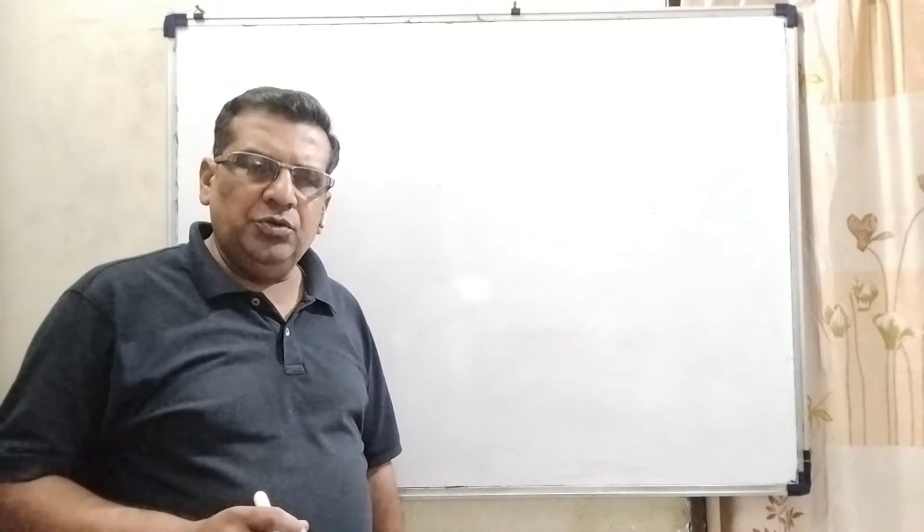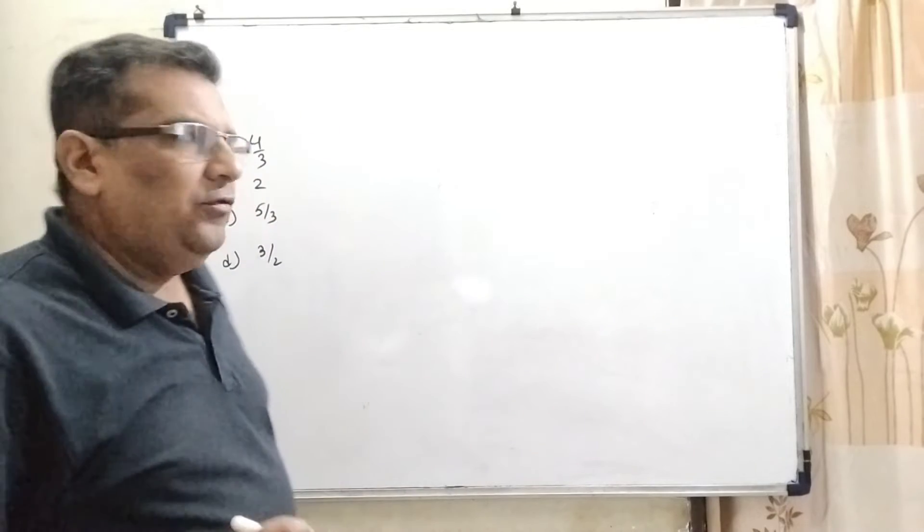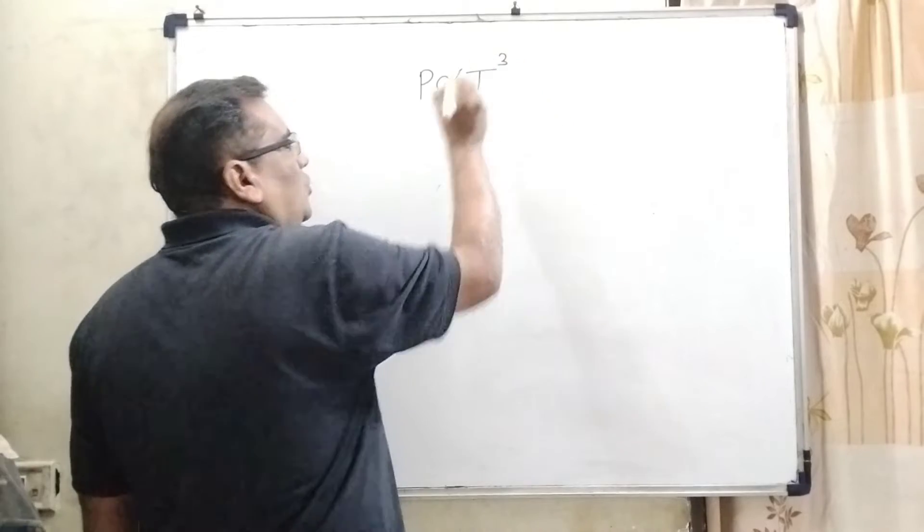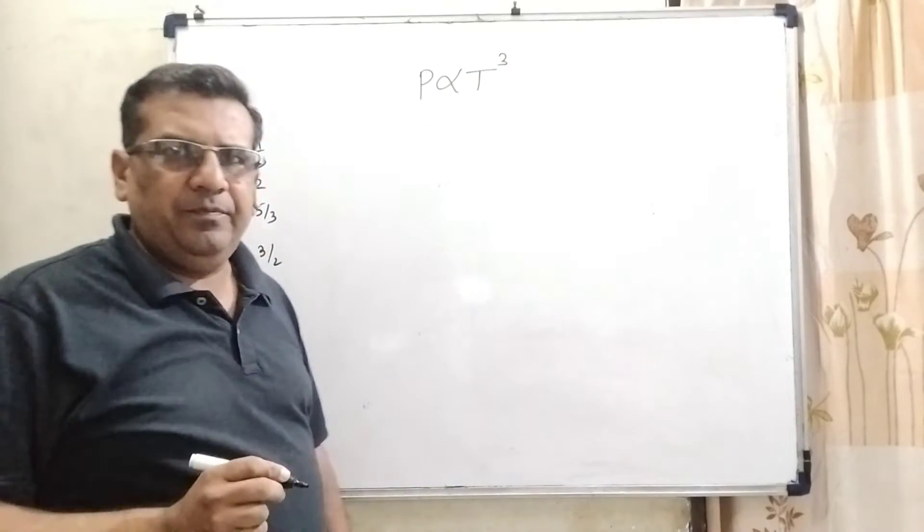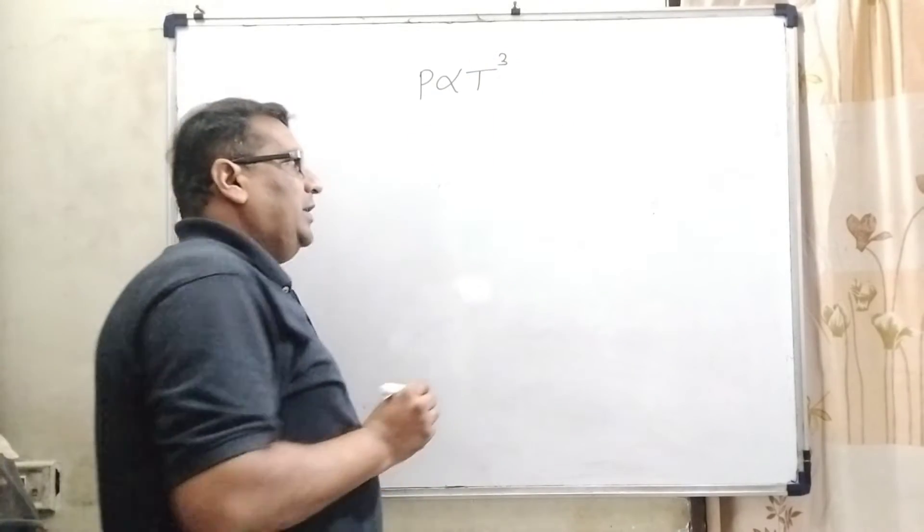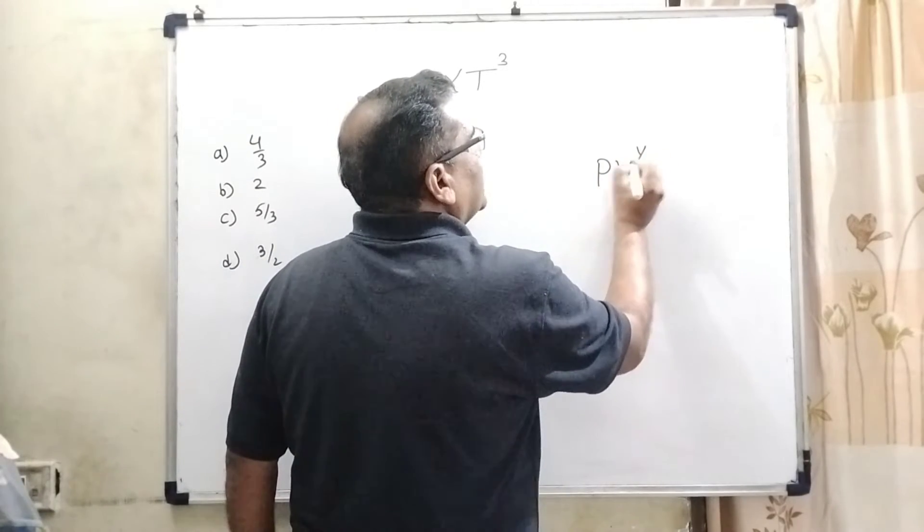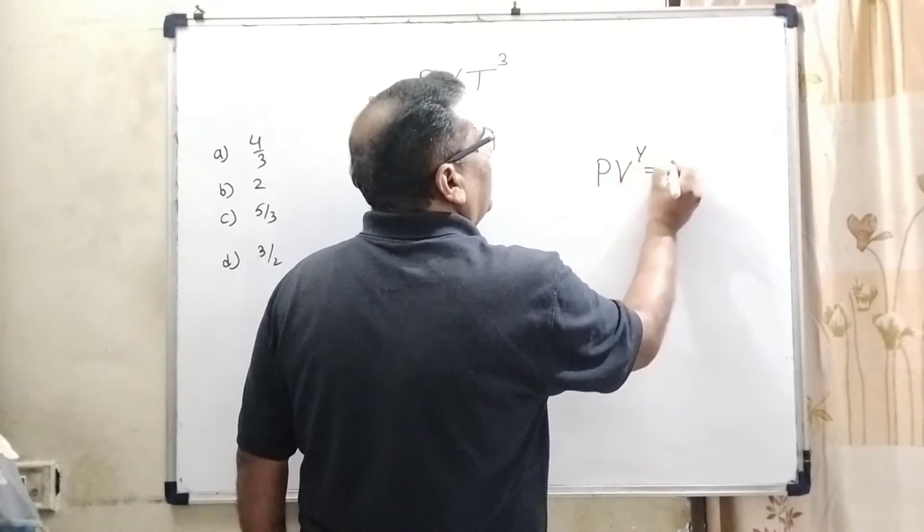In this question, for adiabatic process, pressure is directly proportional to the cube of absolute temperature. We know that, we are using the formula for adiabatic process PV raised to the power gamma equal to K.